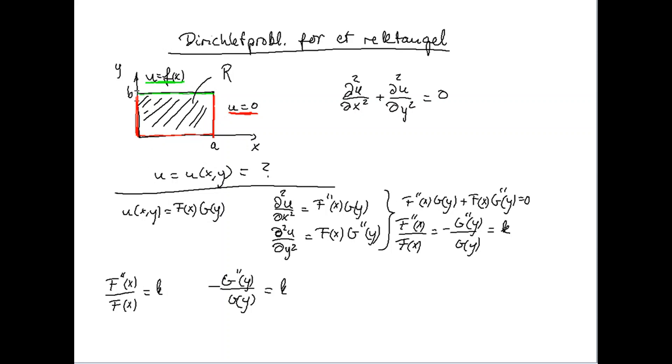And the boundary is given by these four lines where the temperature u is equal to 0 on the red part and is equal to some given function f of x on the green part.